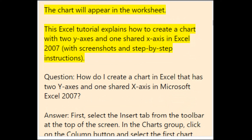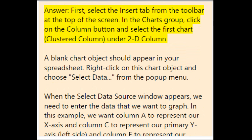To create a chart with two y-axes and one shared x-axis in Excel 2007, select the Insert tab from the toolbar. In the Charts group, click the Column button and select the first chart — Clustered Column under 2D Column. A blank chart object should appear in your spreadsheet. Right-click on this chart object and choose Select Data.